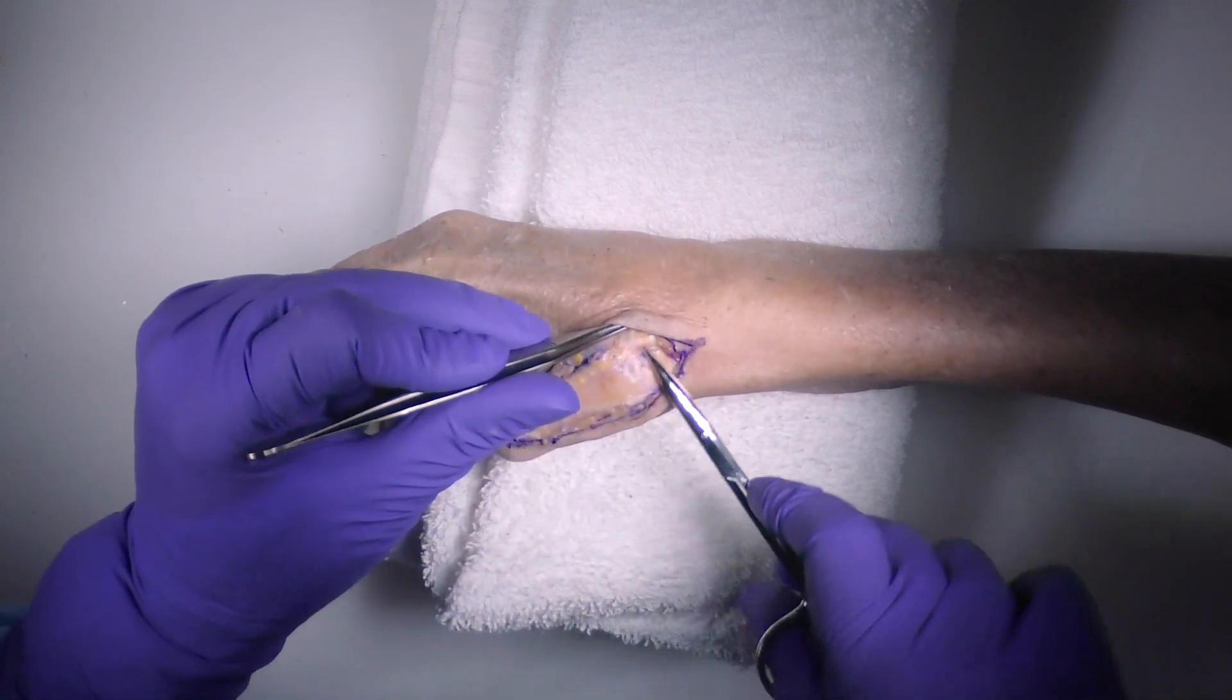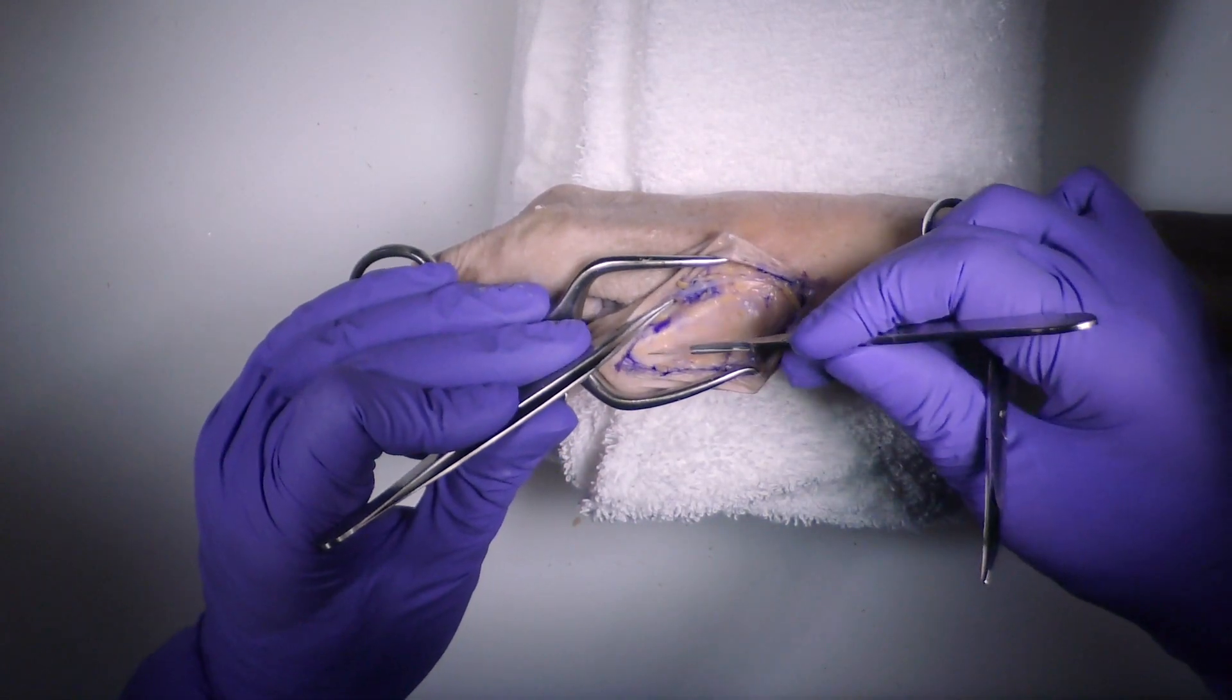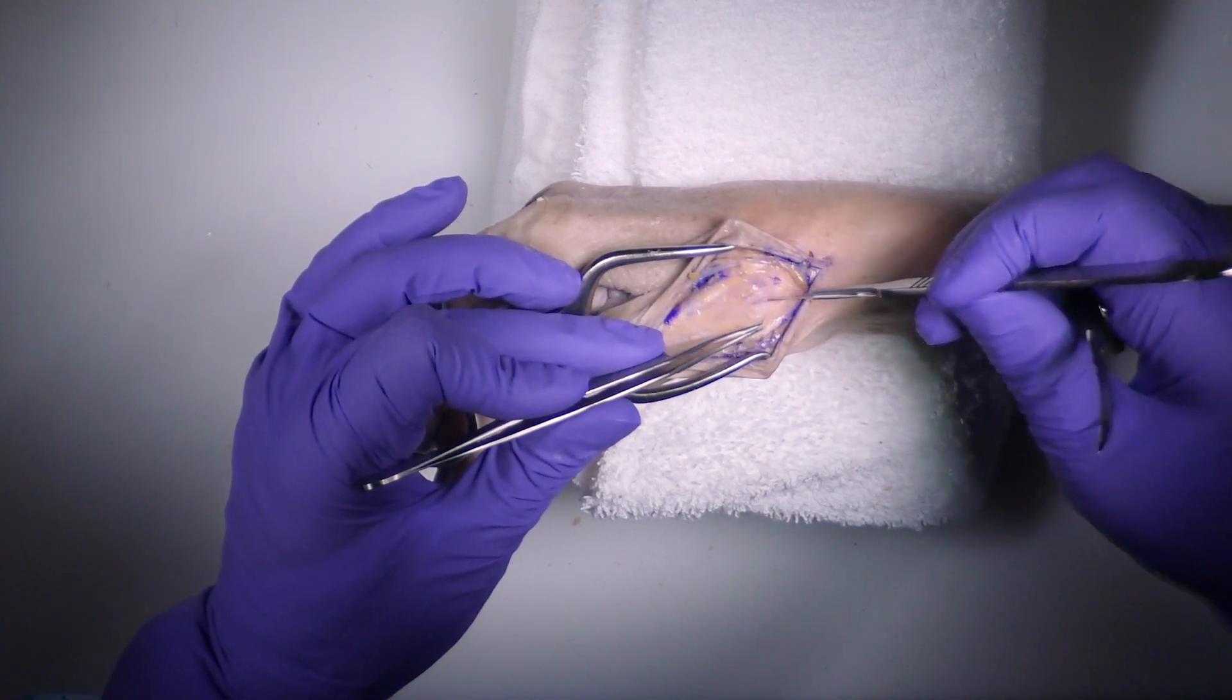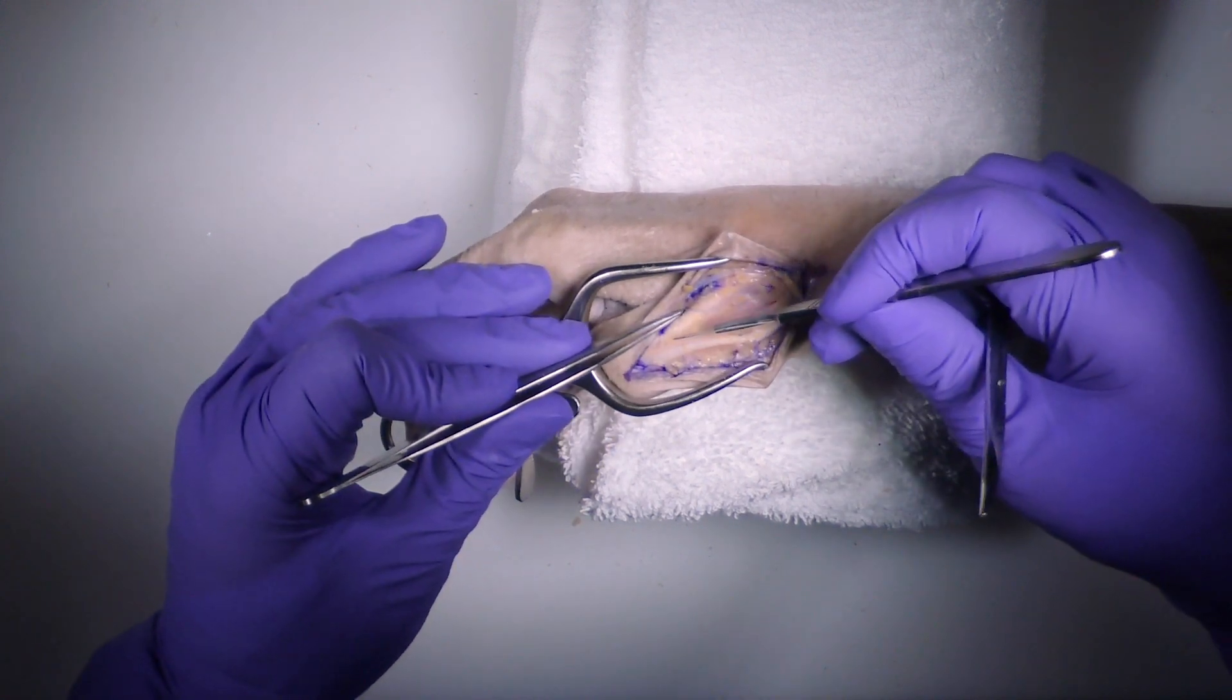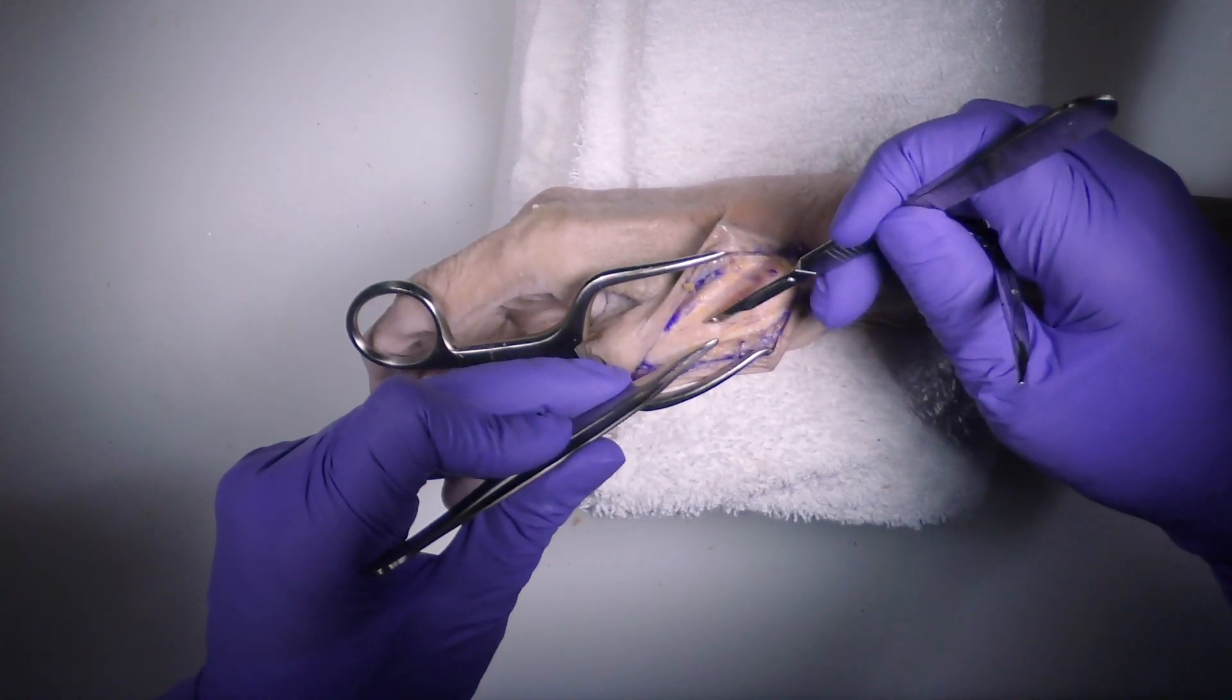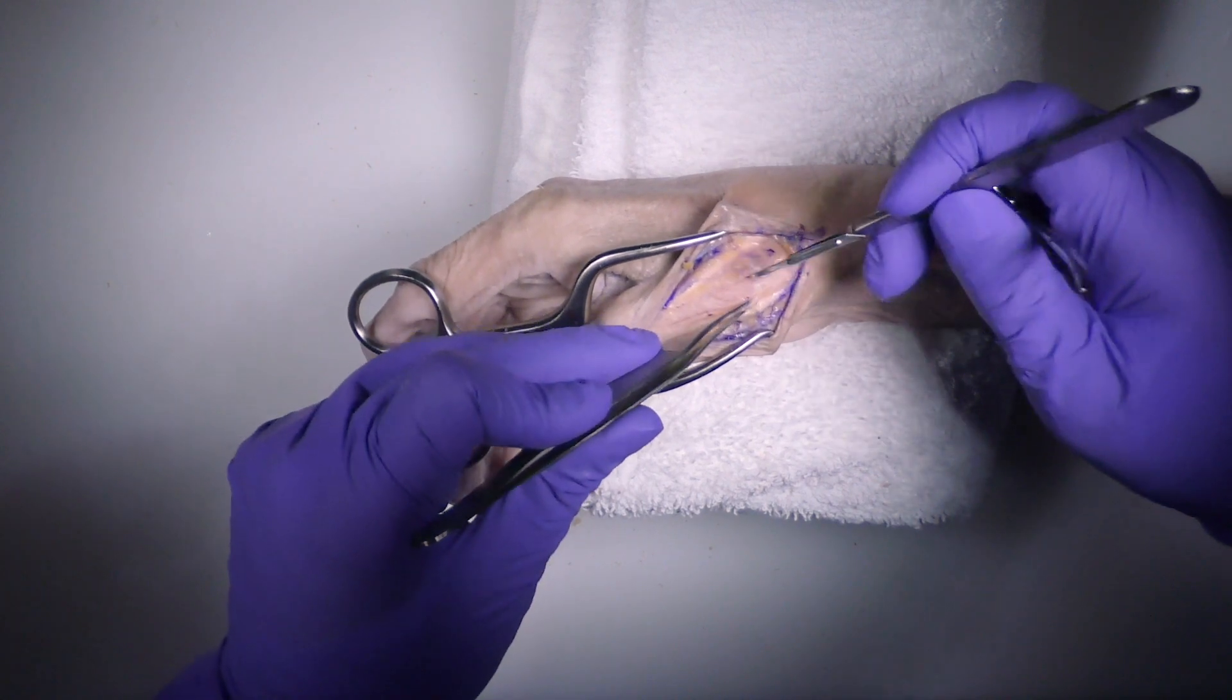The EPB ends in the extensor of the MP joint of the thumb; the EPL goes all the way to the IP joint of the thumb. Now we're going to expose the thumb metacarpal. These go right down the middle into the CMC joint—the carpal metacarpal joint, also known as the TMC, the trapezium metacarpal joint. Some people just call it the thumb basal joint. I'm going to try to elevate this as best I can subperiosteally.